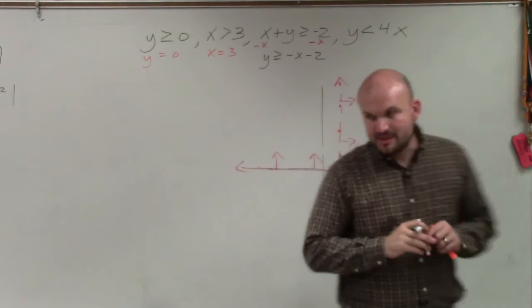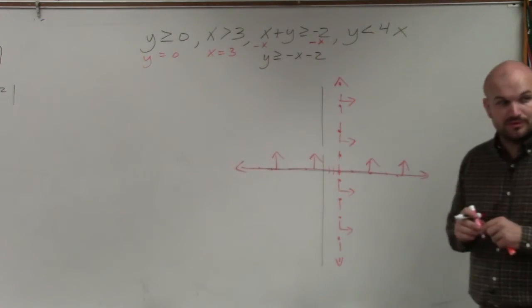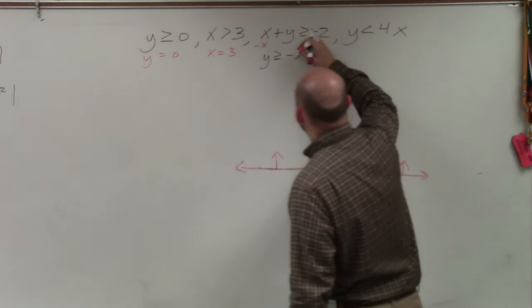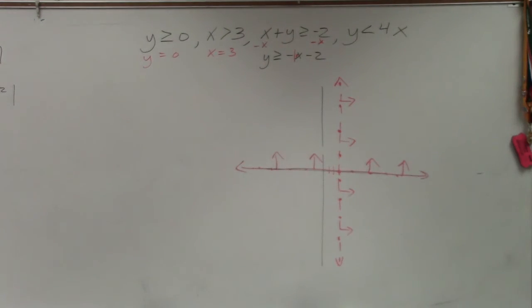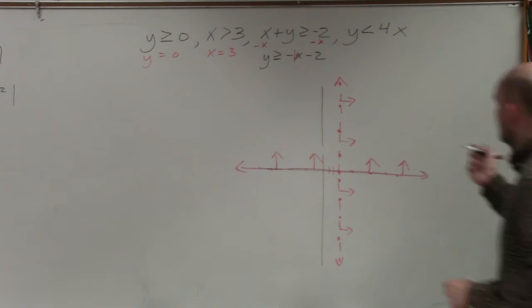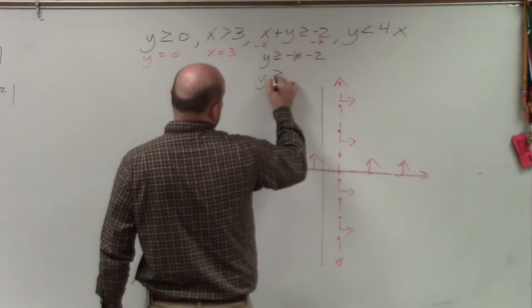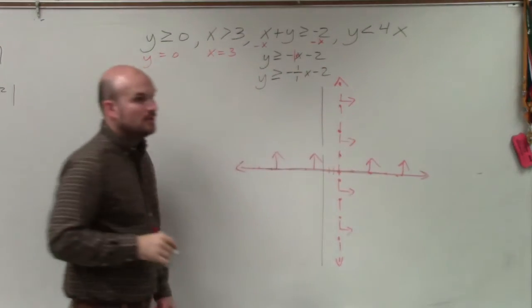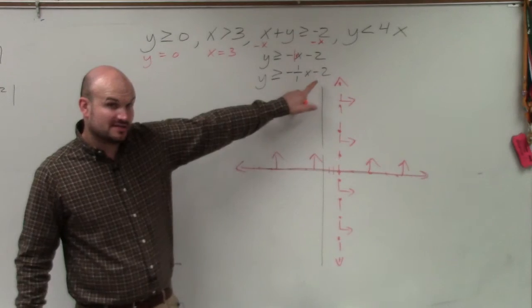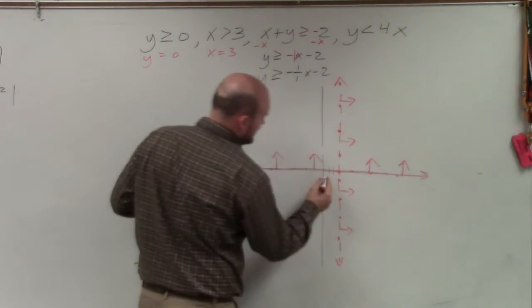Now, the next equation might be a little bit difficult for people to remember. Remember when we do not have a number in front, that number can be represented as 1. So if you want to write the slope, we can write this as y is greater than or equal to negative 1 over 1x minus 2. What that tells you is my y-intercept is negative 2, so I go down to negative 2.